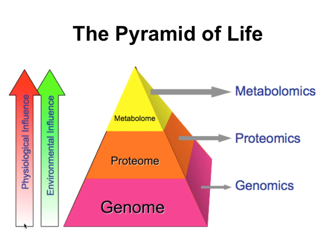You have this progression where the gene codes for protein, and protein codes for metabolites. The study of each of them is genomics, proteomics, and metabolomics. Part of the reason for that pyramid is that when you count the number of critical or endogenous metabolites shown on most biochemical pathways, there are about 1,000 key ones. So: 20,000 genes, 5,000 enzymes, 1,000 metabolites — we go up in numbers.